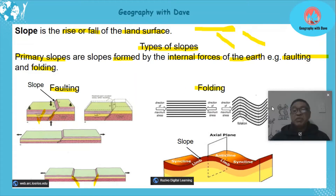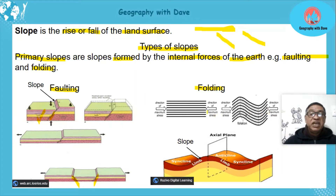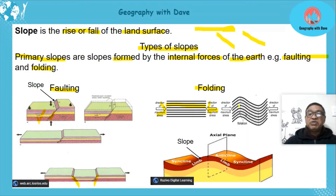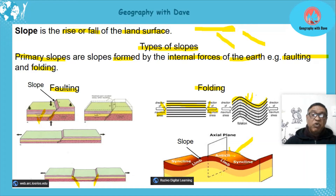Then there's folding. The rock was originally straight horizontal strata. Then forces — stress and compression — were applied to it, and the rock starts to fold. Can you see a slope forming there? So folding also creates primary slopes.